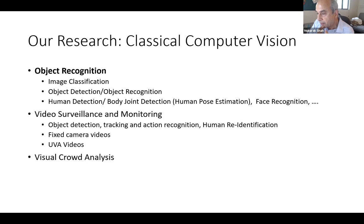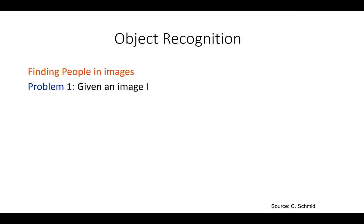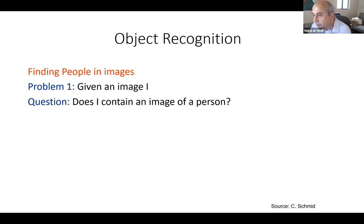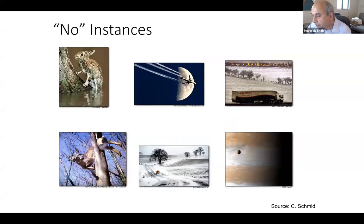Object recognition deals with finding people in images. Given an image, does it contain a person? The computer will say yes for images with people — positive instances — and no for images without people. Similarly, the computer can identify these images as airplanes and these as motorcycles.